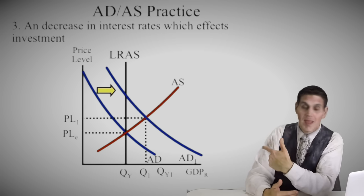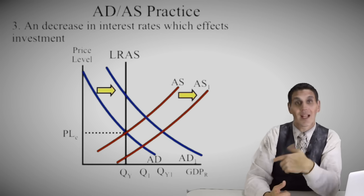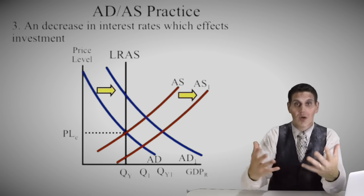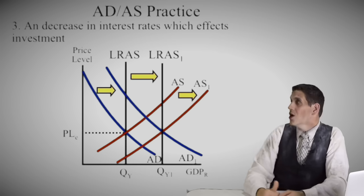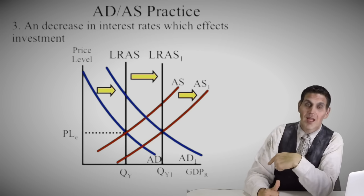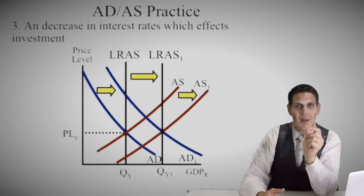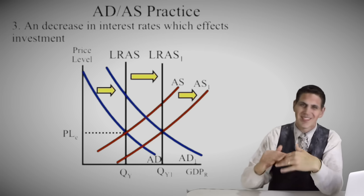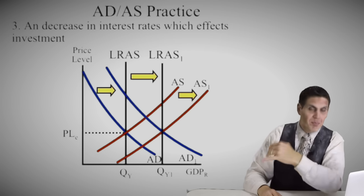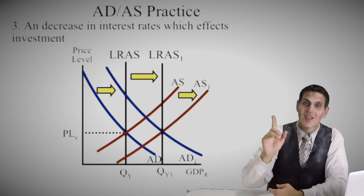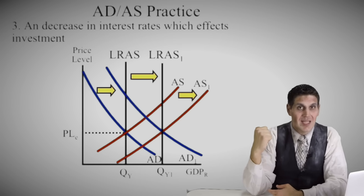Number three: a decrease in interest rate would increase investment. More investment means a shift in aggregate demand. But more investment also means more capital, tools, and machinery — so that means an increase in aggregate supply because we can produce more stuff. If we can produce more stuff in the long run, the long-run aggregate supply will also shift. So price level is indeterminate, but we do know output is going to increase and it's going to stay up — it's a triple shift. Aggregate demand goes up, aggregate supply goes up, we get to full employment. This is completely different from scenario one: increased government spending doesn't lead to growth, but an increase in investment does lead to economic growth.